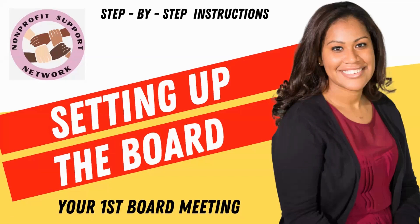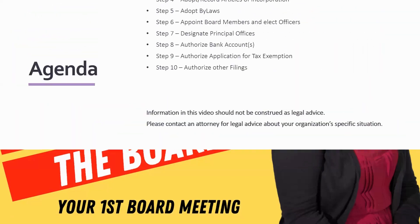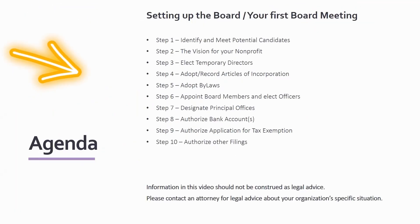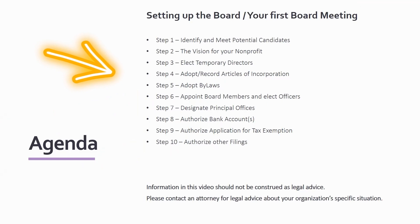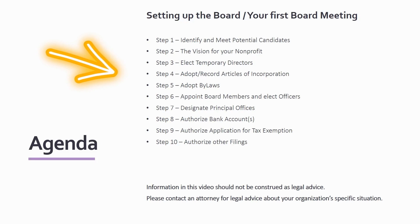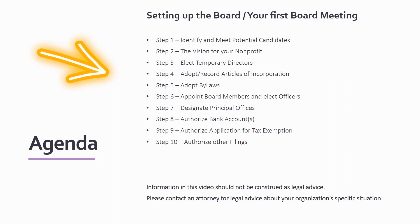Today we're going to talk about setting up the board and hosting your first board meeting. Today's training will review the following: identifying and meeting potential candidates, the vision for your nonprofit, electing temporary directors, adopting and recording your articles of incorporation, adopting your bylaws, appointing board members and officers, designating your principal offices, authorizing bank accounts, authorizing your application for tax exemption, and authorizing other filings.